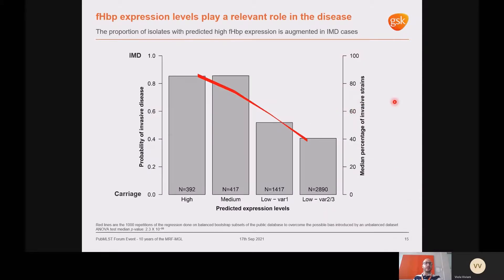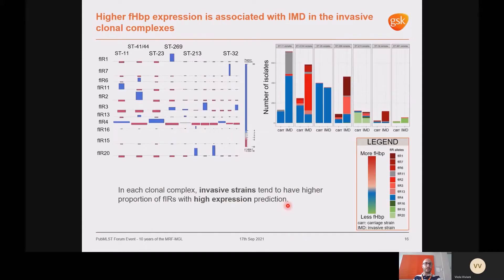To understand if FHBP expression might have a role in Meningococcal disease, we used FIR alleles to predict expression levels of strains in this dataset, dividing isolates into the experimentally determined expression groups. Our analysis showed an augmented proportion of high-expressing strains in invasive Meningococcal disease cases. Although clonal complexes are also associated with invasiveness and some FIR alleles are strongly associated with clonal complexes — potentially masking the contribution of both factors — when looking at each clonal complex individually, invasive strains consistently show a higher proportion of FIR alleles with predicted high expression compared to carriage strains.